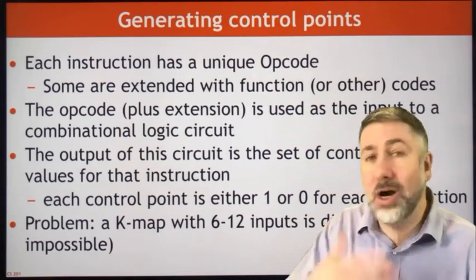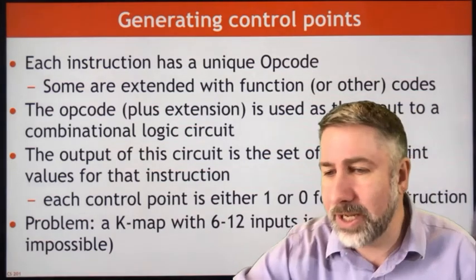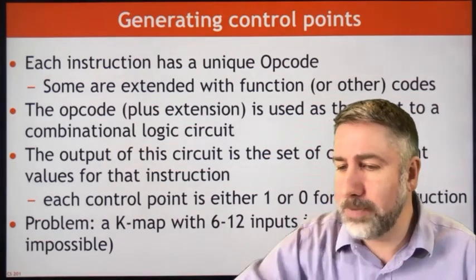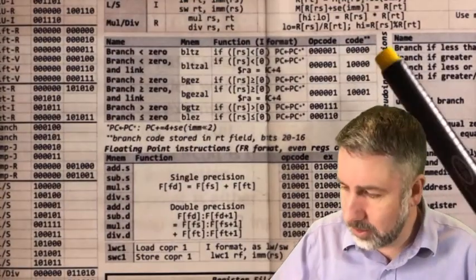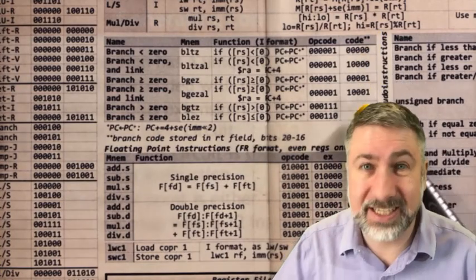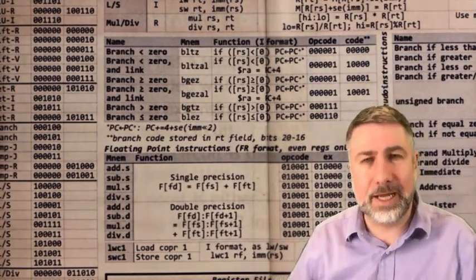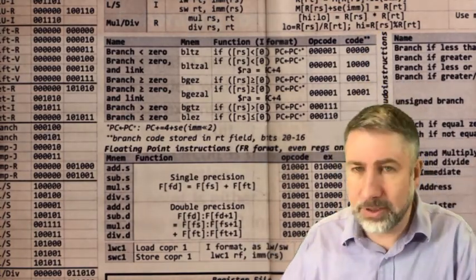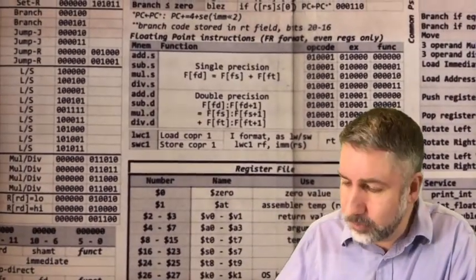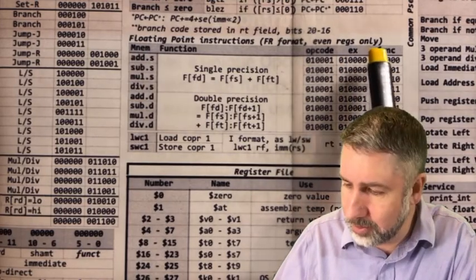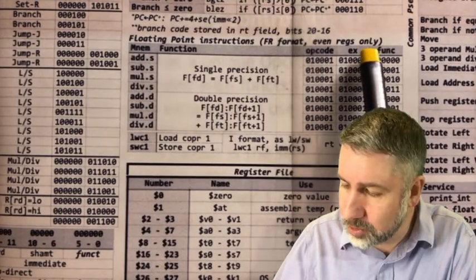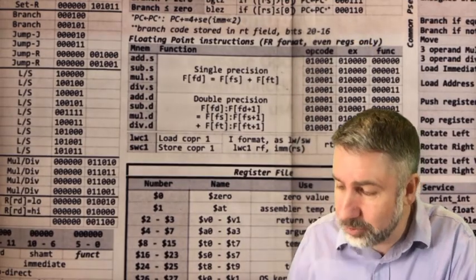There are also a few other special types of instructions extended in different ways. The special extended branch instructions use the RT field as an extension code to indicate what special kind of branch is being performed. Floating point functions, which we haven't looked at yet, also use a separate field — almost half the instruction can be specifications of what the instruction should do, with the other half being operands.